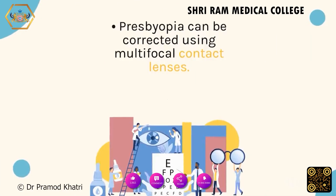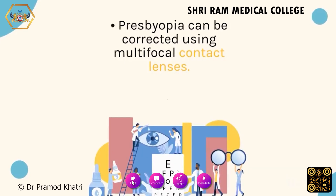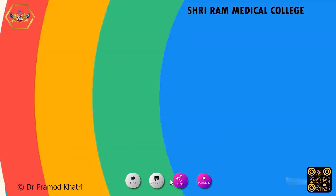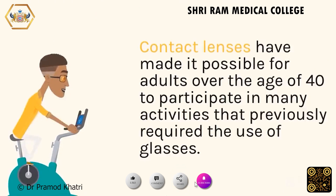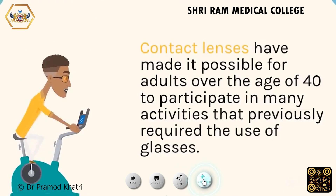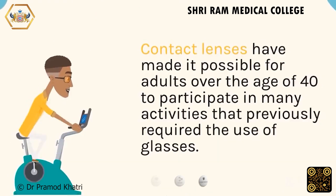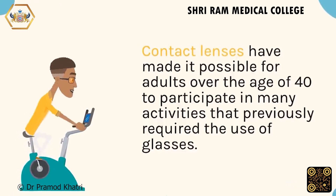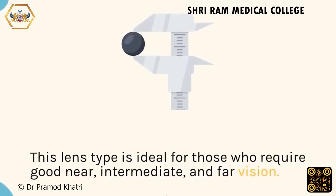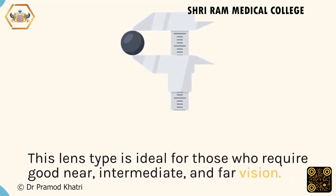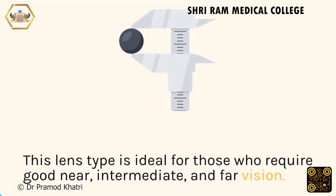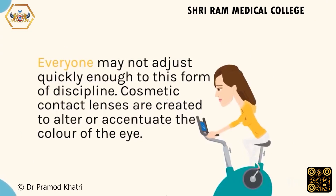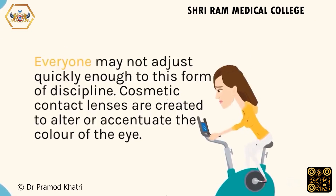Presbyopia can be corrected using multifocal contact lenses. Contact lenses have made it possible for adults over the age of 40 to participate in many activities that previously required the use of glasses. This lens type is ideal for those who require good near, intermediate, and far vision, though everyone may not adjust quickly enough to this form of correction.